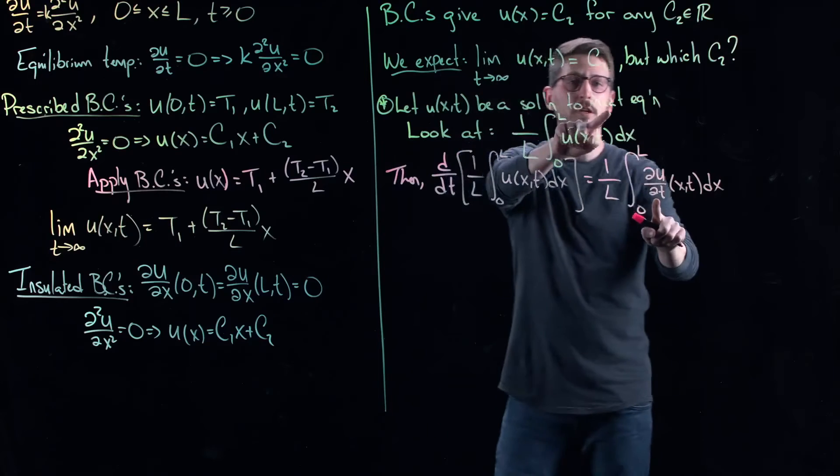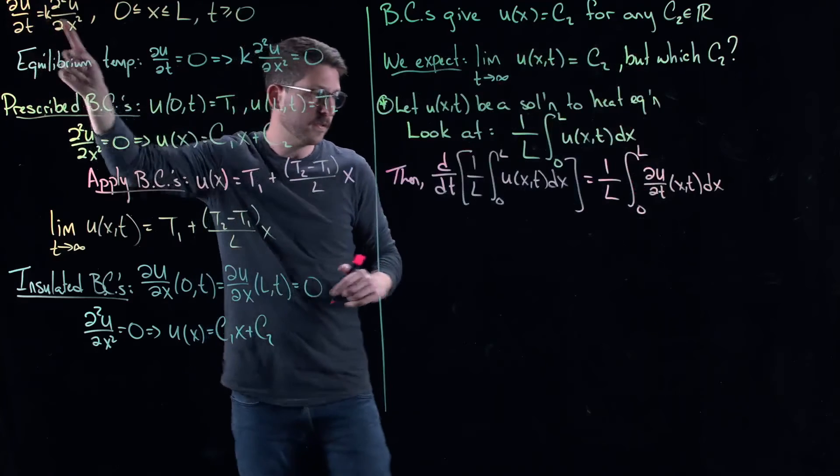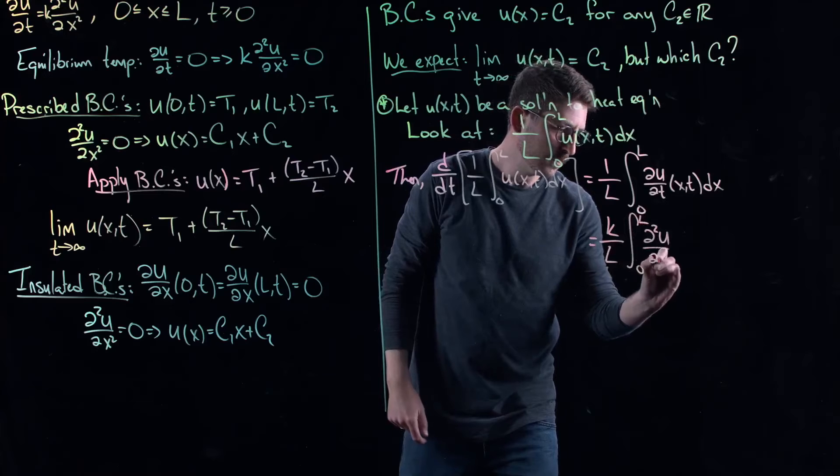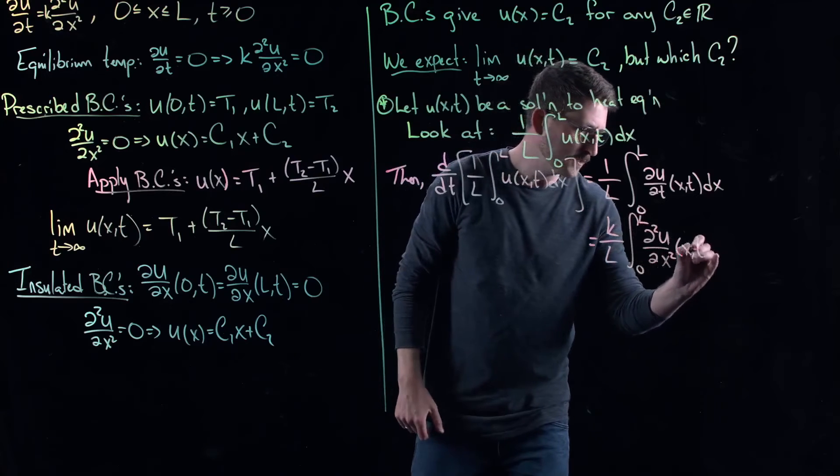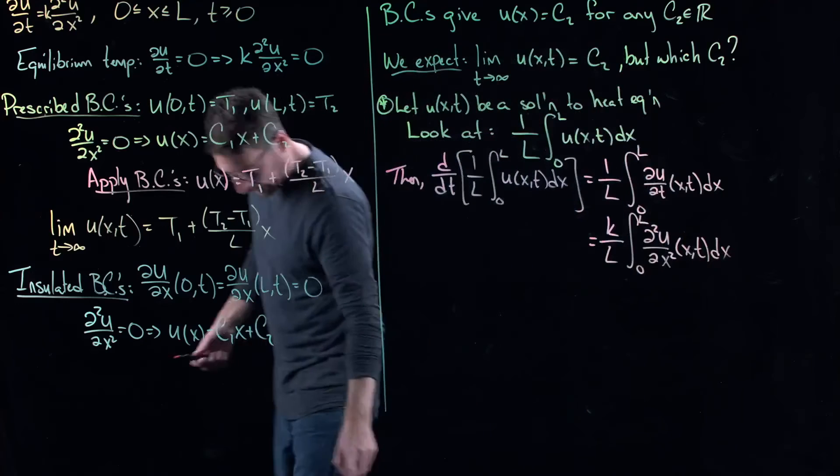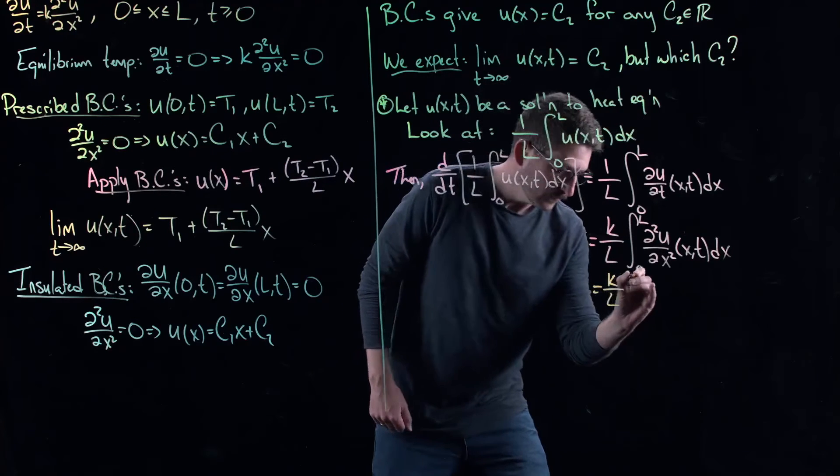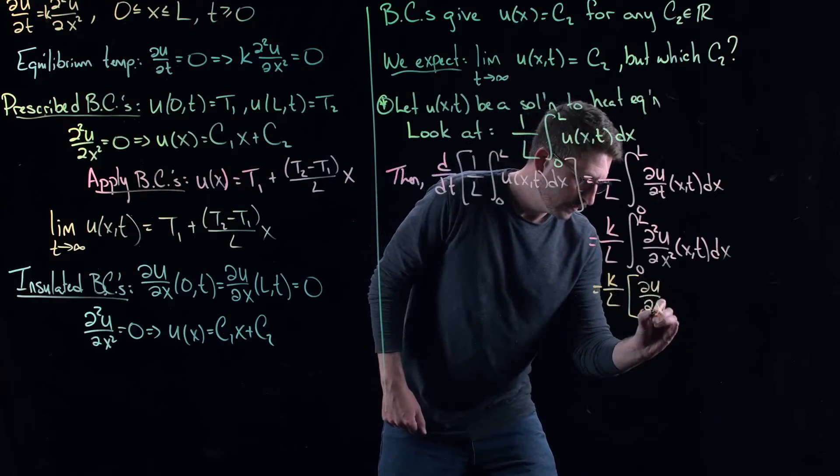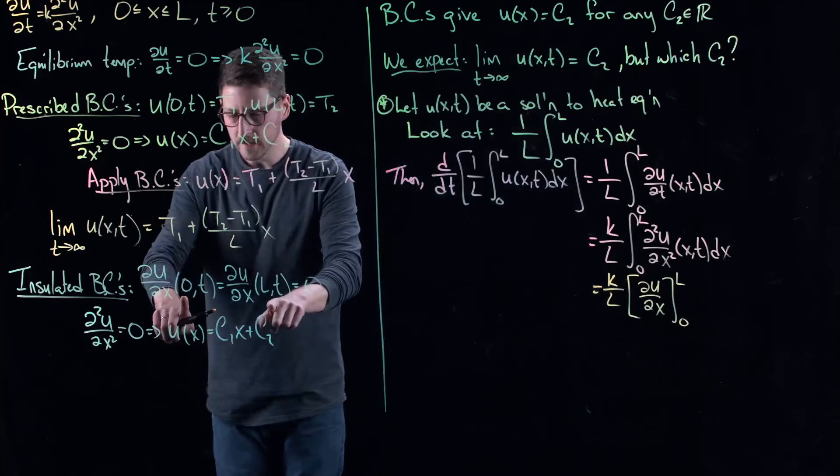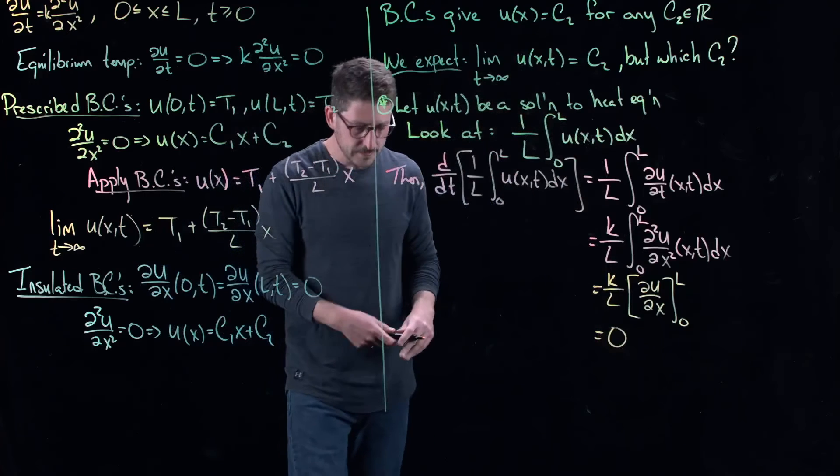So now I get 1 over L, zero to L of the partial derivative of U with respect to T integrated with respect to X. But now, I know this thing is a solution to the heat equation. That means that its time derivative is equal to its second space derivative times K. So now I get K over L integral from zero to L of Uxx of T dx. Now I'm taking the integral of a derivative. This is a fundamental theorem of calculus application. So here I get K over L, and now I get the first derivative, and I'm evaluating it at each of the endpoints zero and L. But my Neumann boundary conditions told me that it's zero at each endpoint. And so this thing is equal to zero.